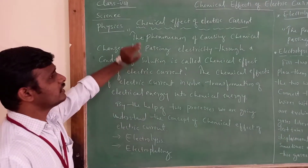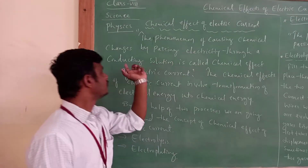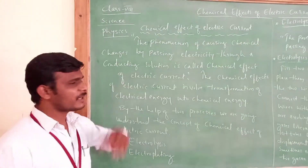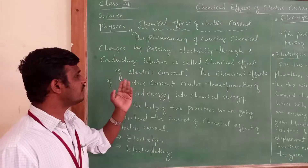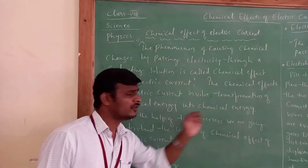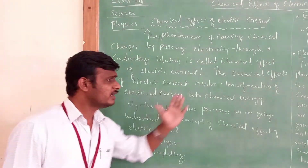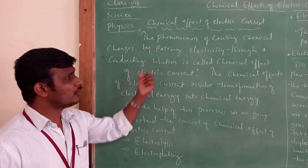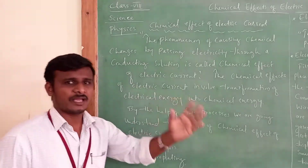The definition of chemical effect of electric current: the phenomenon of causing chemical changes by passing electricity through a conducting solution is called the chemical effect of electric current. When we pass electricity through a conducting solution, chemical changes occur. This involves the transformation of electrical energy into chemical energy.